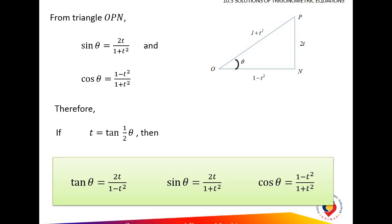Normally I will ask students to memorize it. You get sin theta as 2T over 1 minus T squared, and the hypotenuse is 1 plus T squared. I just want you to remember this. What is the difference? The adjacent and the hypotenuse — the difference is only the sign. This one is plus, but this one is minus T squared.